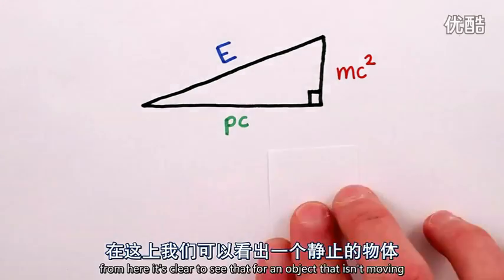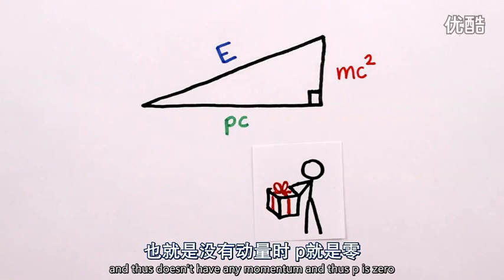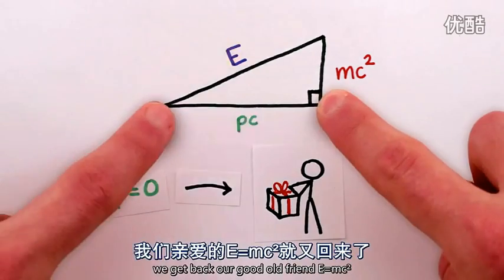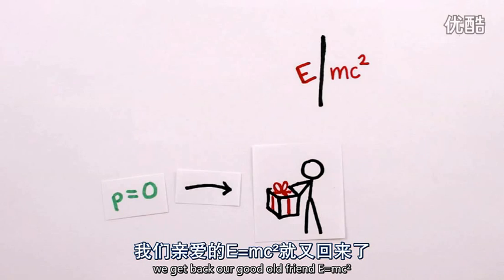Also, from here it's clear to see that for an object that isn't moving and thus doesn't have any momentum, and thus p is zero, we get back our good old friend E equals mc squared.